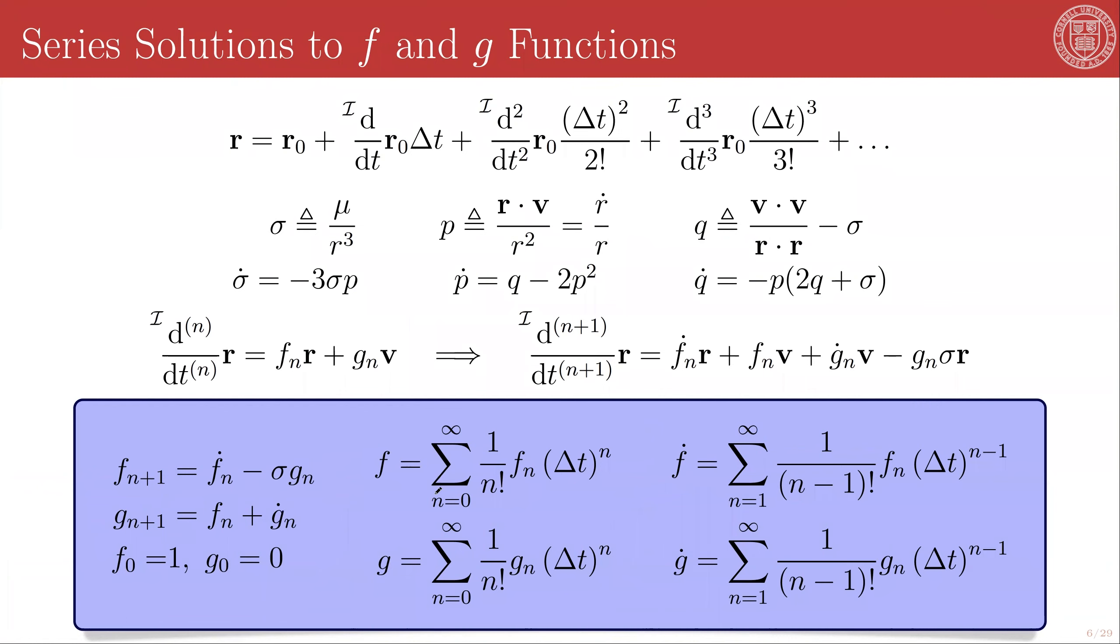Well, we just say that the 0th order derivative of r is r itself, which means that f naught is 1, and g naught is 0. And so, from this, we can calculate this series expansion to any order using these summation relationships. This means that we can now recursively generate a power series solution to the Kepler state transition matrix to any arbitrary order.